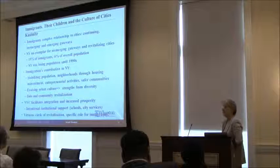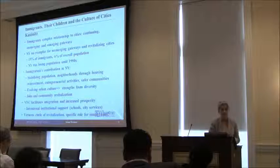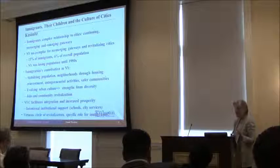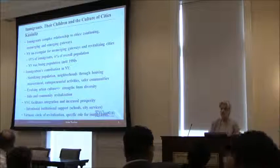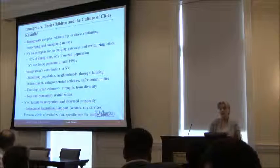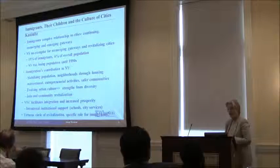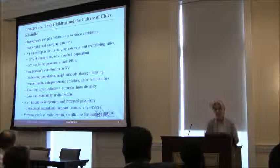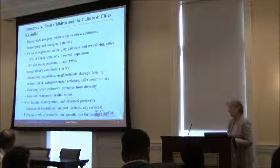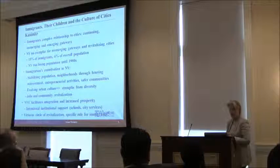The complexity is thrown light on by Phil's paper, which points to, first and foremost, stabilizing the population. But it's not automatic, because as new groups come in, it's possible, as Jake noted, that people leave. But also, neighborhoods stabilize through reinvestment — entrepreneurial activities, safe communities, and the issue of urban culture and the strengths of diversity. And of course, jobs.